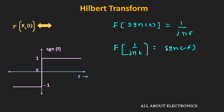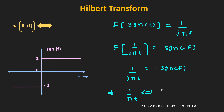As we can see, the signum function is an odd function. That means the Fourier transform of 1/(jπt) equals −sgn(f), and in this way we found the Fourier transform of 1/(πt).